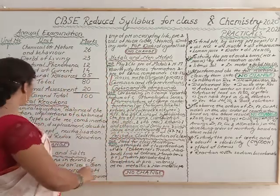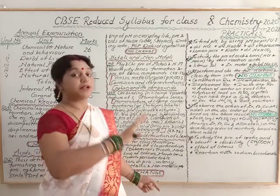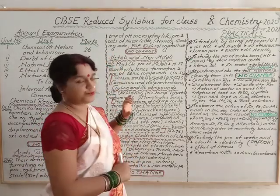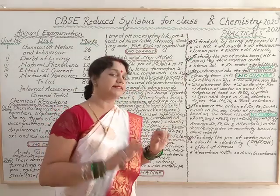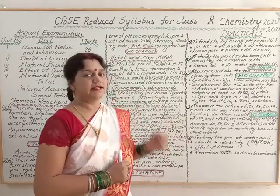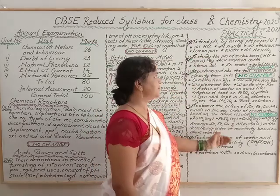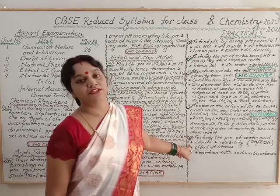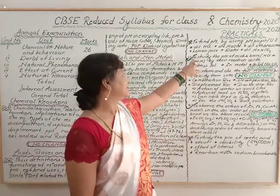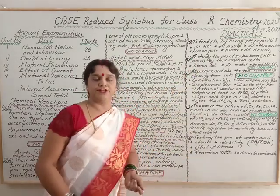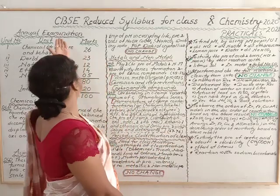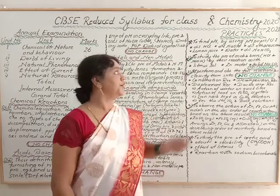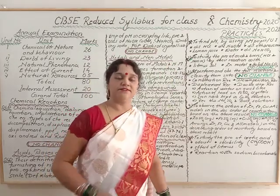So in theory: chapters 1, 2, and 5 are to be studied completely; chapter 3 has some portion deleted; chapter 4 has approximately 70% deleted. In practicals: serial number 1 (pH test) and serial number 5 (acetic acid properties) have been removed. Practicals 2, 3, and 4 remain in your syllabus. This is all about the CBSE reduced syllabus for class 10 chemistry for the session 2020-21.